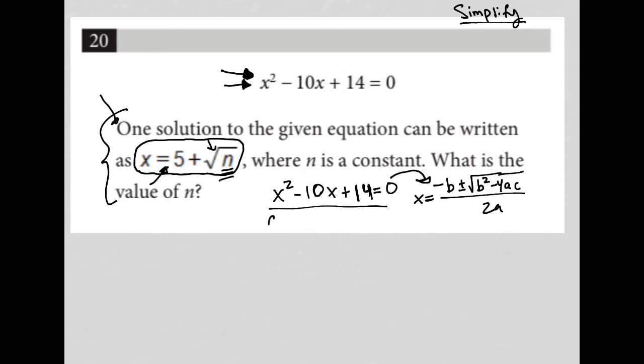For us we know that a is 1, because there's no number from the x squared, b is negative 10 because that's the second term, and c is 14 because that's the third term. So let's throw all these things in.